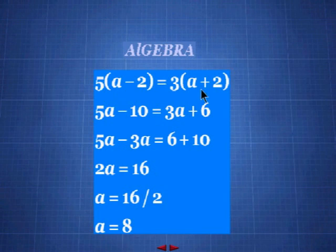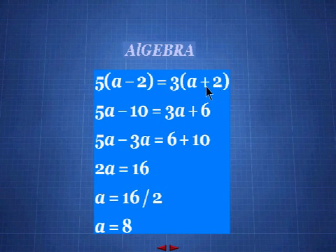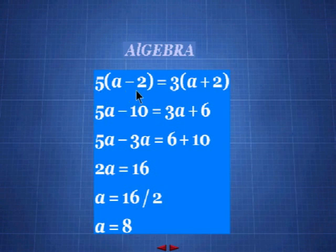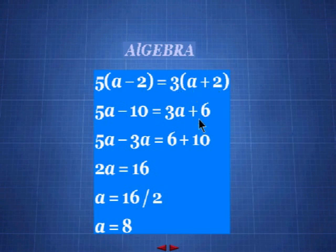Since inside the parentheses we have addition and subtraction, let's expand by doing the multiplication. On the left: 5 × a = 5a, and 5 × 2 = 10, giving 5a − 10. On the right: 3 × a = 3a, and 3 × 2 = 6, giving 3a + 6. So we now have: 5a − 10 = 3a + 6.